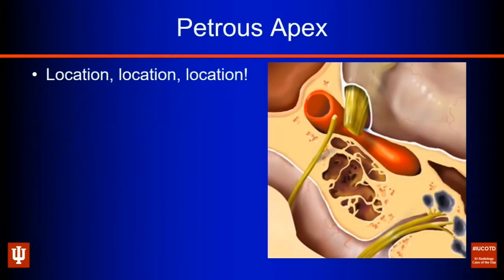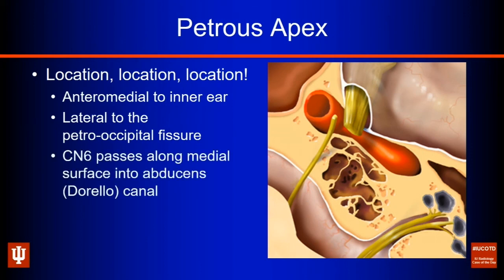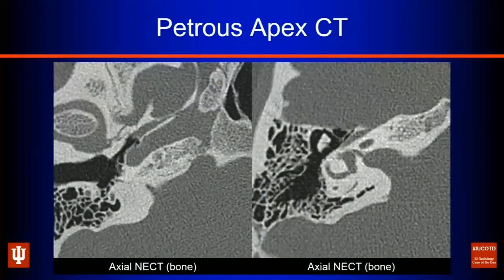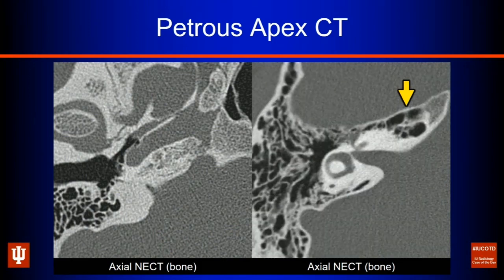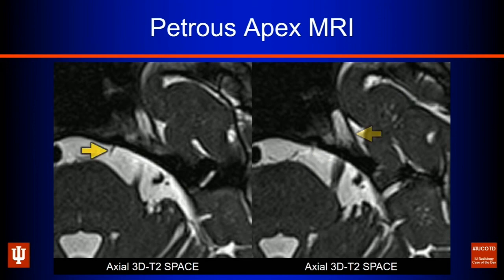A few brief words about the petrous apex. This sits anteromedially to the inner ear by the petrooccipital fissure, with cranial nerve six and the trigeminal nerve passing in close proximity, and the carotid artery sitting anterior to it. On axial CT, we can see the carotid canal. About a third of the time you'll have pneumatized air cells there. On MRI, it nicely shows the relationships to the nerves — the cisternal segment of the trigeminal nerve going to the trigeminal cave, and the cisternal segment of cranial nerve six going up to Dorello's canal.